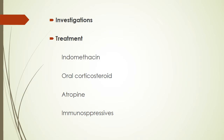For treatment, tablet indomethacin 100 mg for 4 days then 75 mg daily until inflammation resolves may be given. Oral corticosteroids around 60–80 mg should be given and tapered gradually. Topical steroids are given particularly in associated iridocyclitis, and atropine 1% eye ointment may be given in associated uveitis. Immunosuppressive drugs may be given in severe and unresponsive cases.